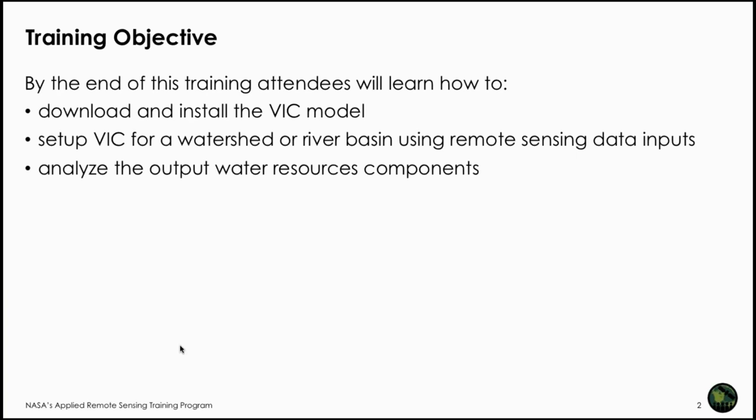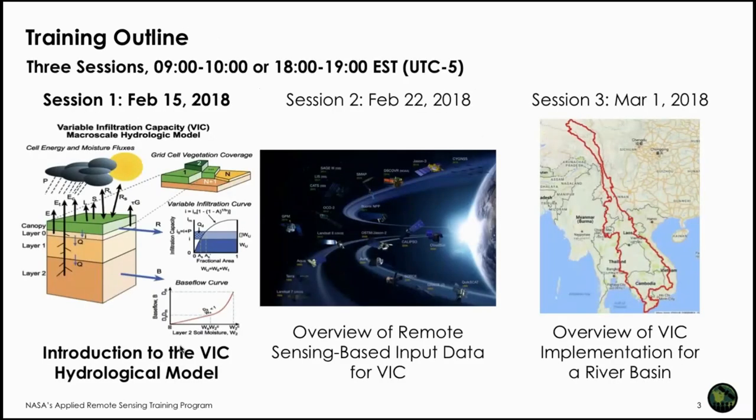The overall objective of this training is to teach where and how to download the VIC model, how to set it up for a particular watershed or river basin using remote sensing data, and finally how to analyze output for a number of applications including water resources management and flood or drought applications. At the end of this training, attendees will learn where and how to download and install VIC, where to get VIC inputs, and how to implement VIC for a river basin and analyze output.